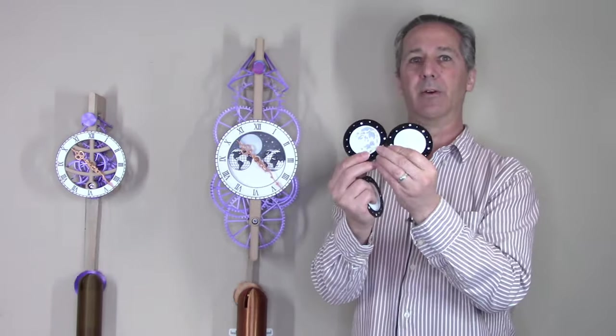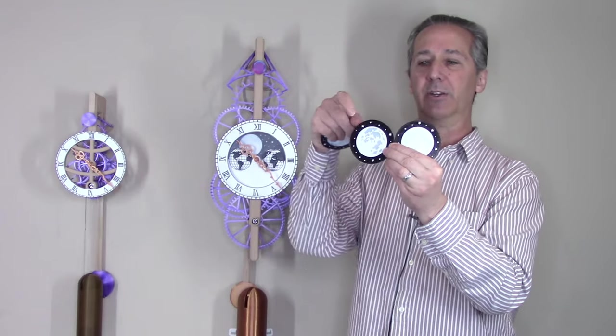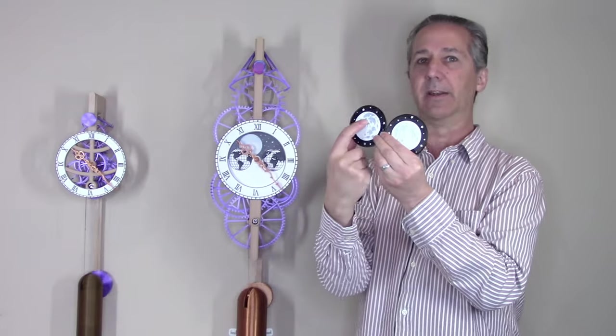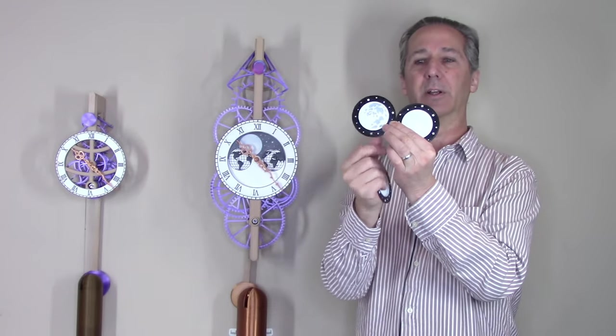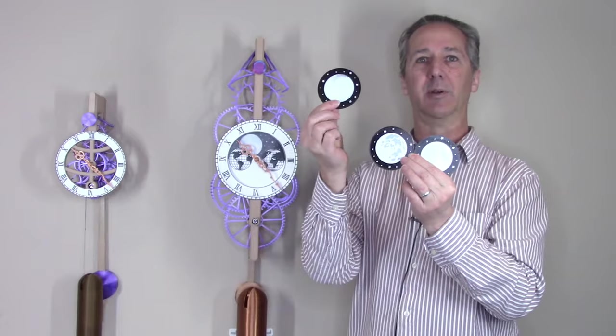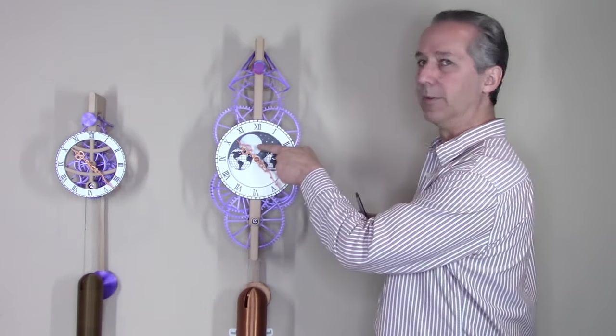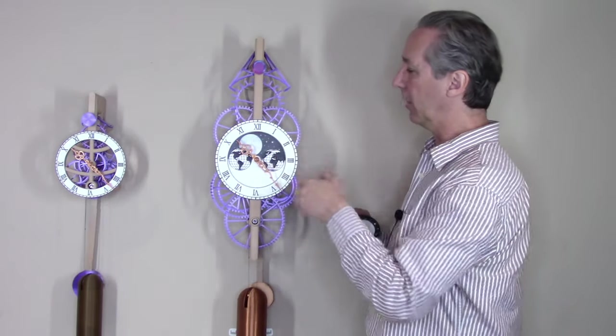And you can play around with the layer heights on where you change from the black layer to the white layer to get essentially a grayscale for a couple of different looks on the moon. So you can print these test cookies, figure out how you want the moon dial to look.